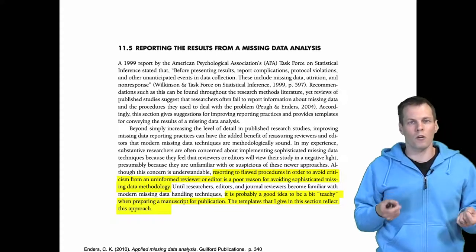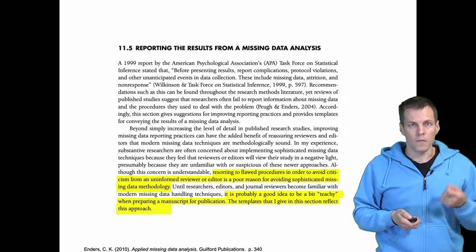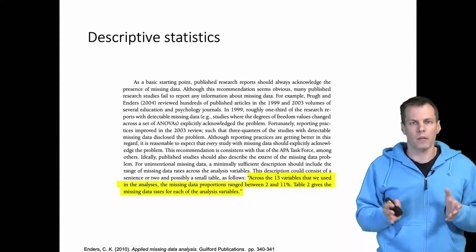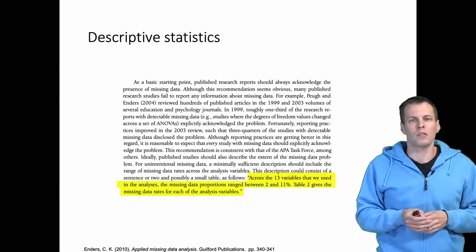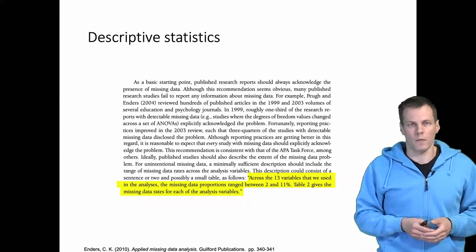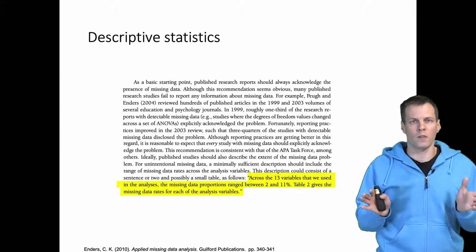So how do you actually go about reporting of these missing data? The first thing that you need to consider is descriptive statistics. So you need to be transparent. It's quite common that researchers simply say that we had our 200 observations and after dropping cases of missing data, we had 150 observations.